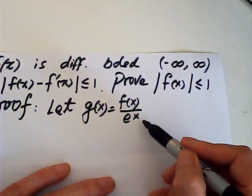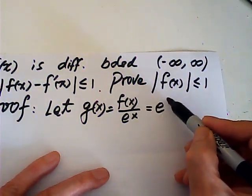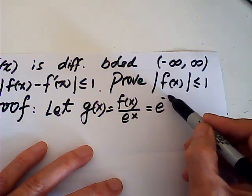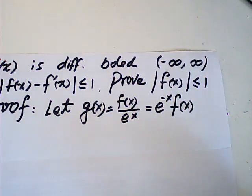Now since e to the x is always positive, we can write this one as e to the negative x times f of x.